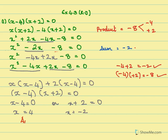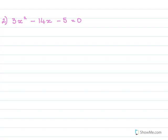So the answer here is x could be 4 or minus 2. The next problem is 3x square minus 14x minus 5 equals 0. Here again, our product should be 3 times minus 5, which is minus 15, and the sum should be minus 14.